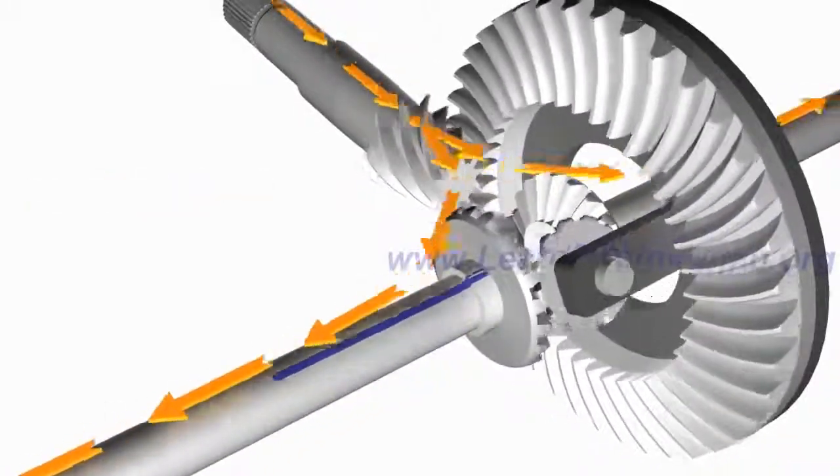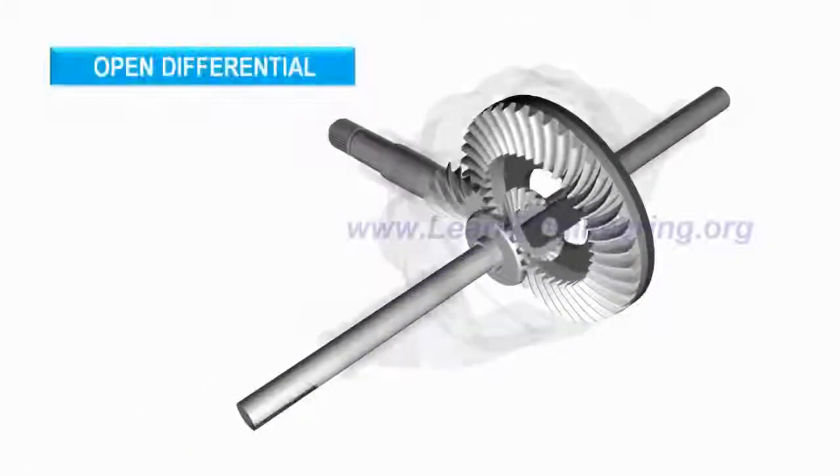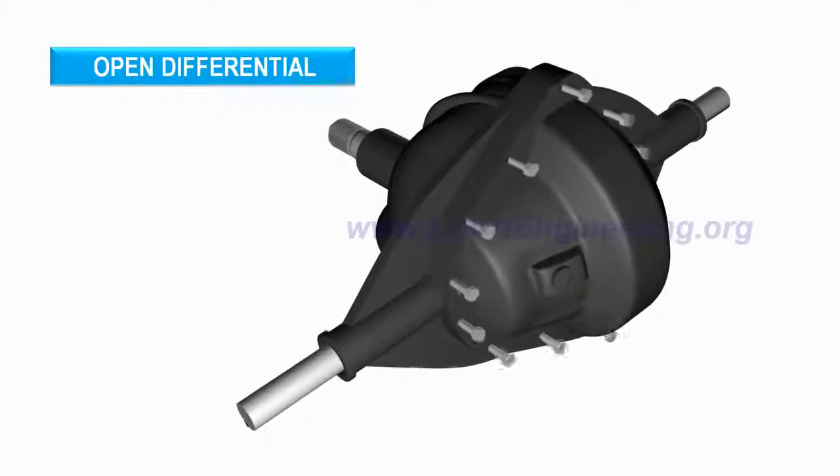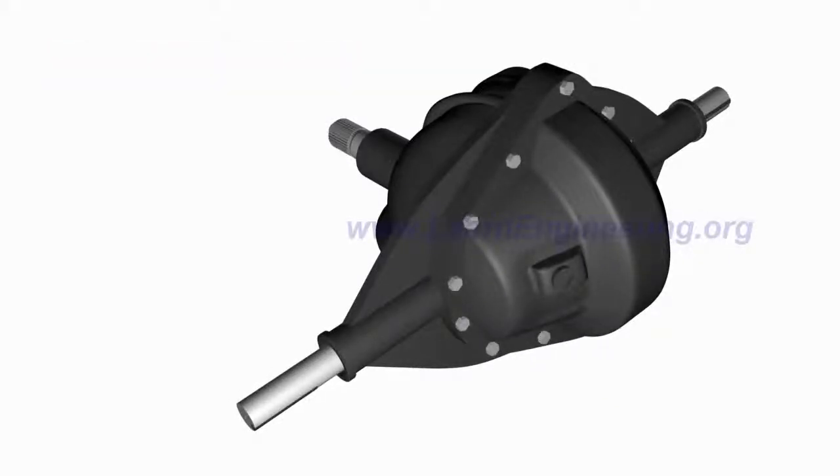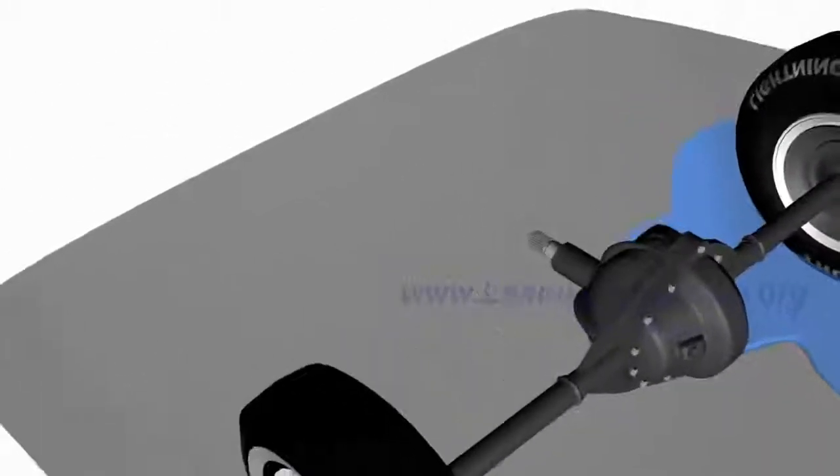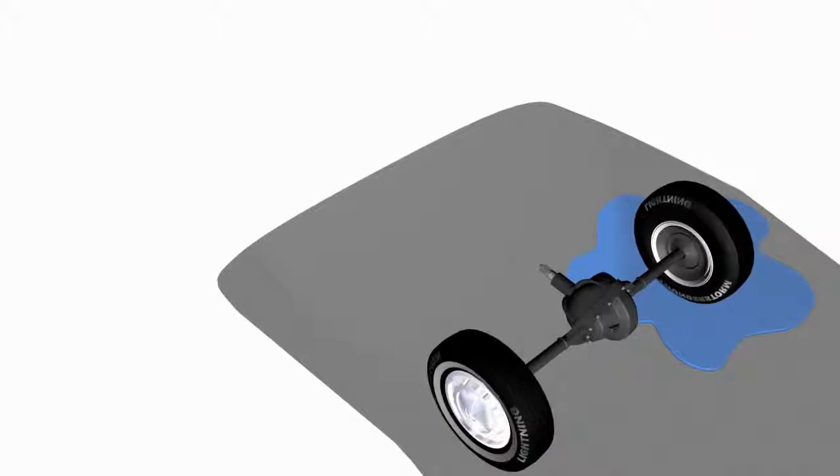The differential we have gone through so far is known as open or standard differential. It is capable of turning wheels at different RPM, but it has got one major drawback. Consider a situation where one wheel of the vehicle is on a surface with good traction and other wheel on a slippery track. In this case, a standard differential will send the majority of the power to the slippery wheel, so the vehicle won't be able to move.